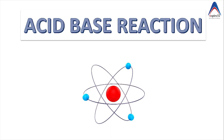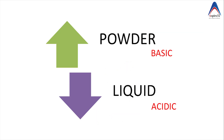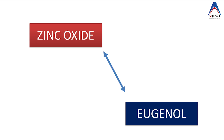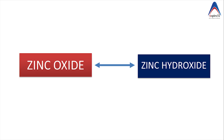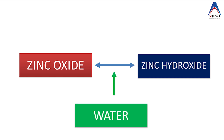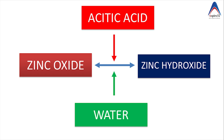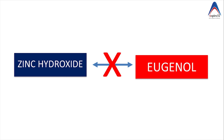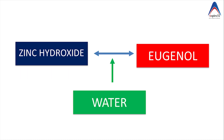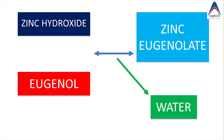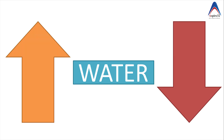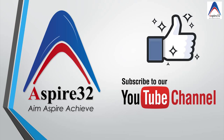This cement sets because of an acid-base reaction — the powder is basic and eugenol is acidic. However, zinc oxide cannot directly react with eugenol; it must first be converted to zinc hydroxide, requiring water or acetic acid. Once zinc hydroxide is formed, water is again needed for it to react with eugenol, forming a chelate called zinc eugenolate and releasing water as a byproduct. Since water is needed to initiate the reaction and is also produced as a byproduct, this reaction is called autocatalytic.